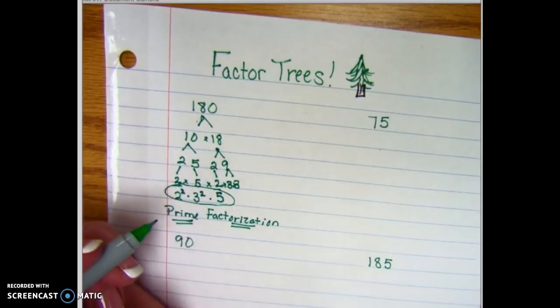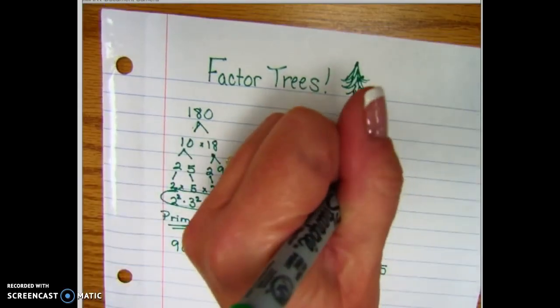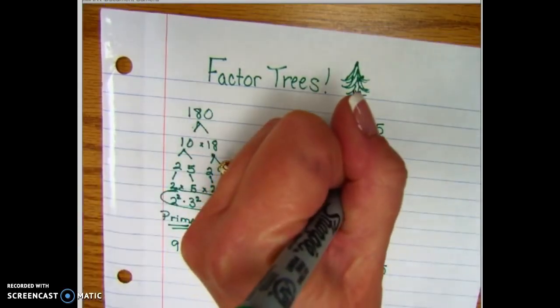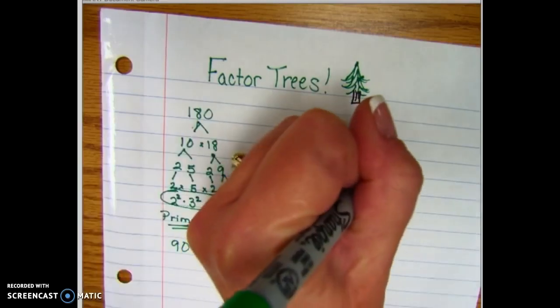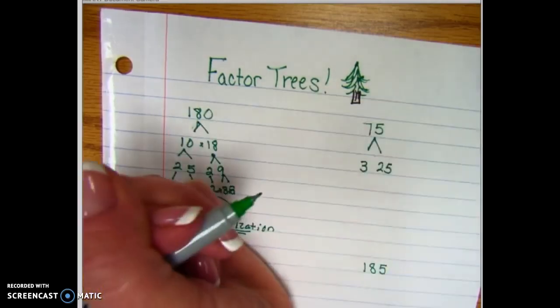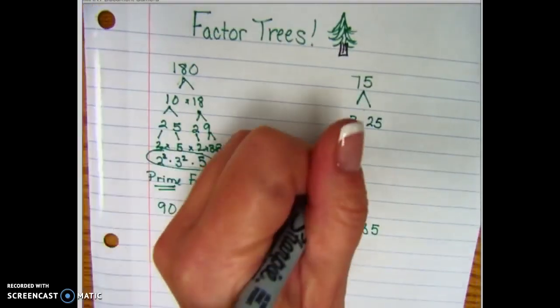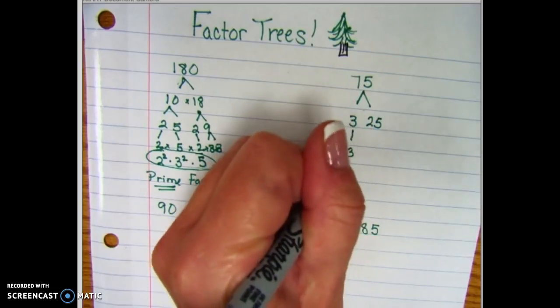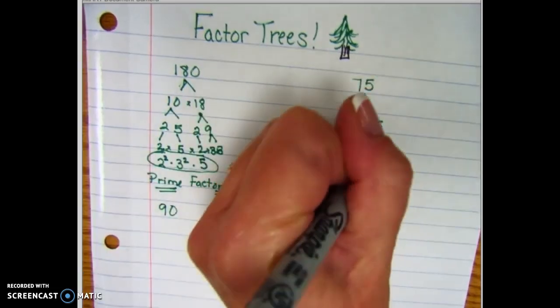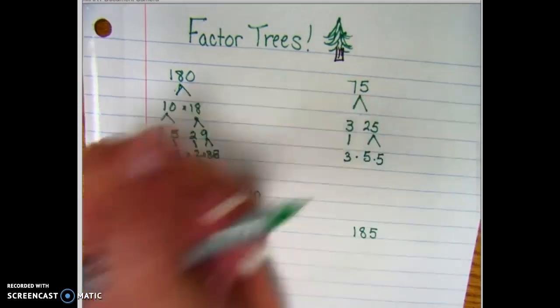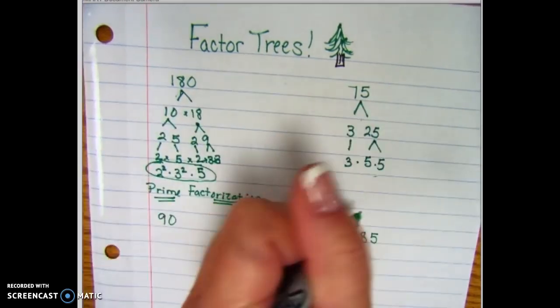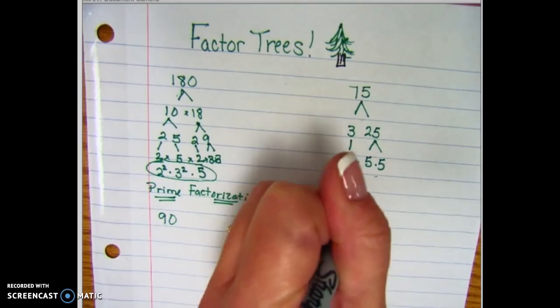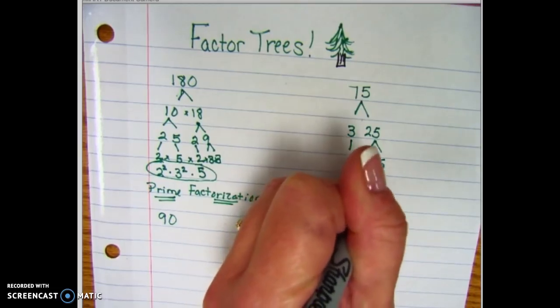Let's try the number 75. I already know that it is 3 times 25 because we all know about quarters. The 3 is already broken down into a prime number. However, the 25 can be a 5 and a 5. This one was quite simple. So if we were to write this in prime factorization, it would be 3 times 5 to the second power.